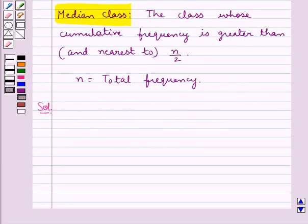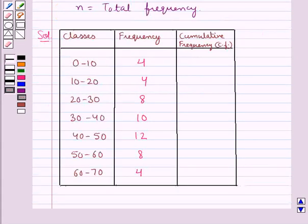So this is the table. We will find the cumulative frequencies for all the classes. The cumulative frequency for the class 0 to 10 is its frequency itself, which is 4.